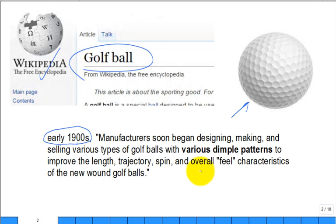In the early 1900s, on the Wikipedia page, it stated that manufacturers began designing, making, and selling various types of golf balls with dimple patterns. And why? To improve the length after they hit it, how far it goes. The trajectory, maybe even can get it to hang, and then with some spin, make it do some things in the air. As well as when it hits the ground, what happens to it, how it deadens and stops where it hits.